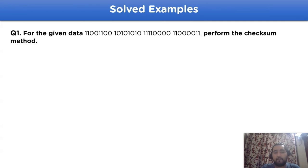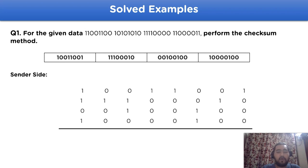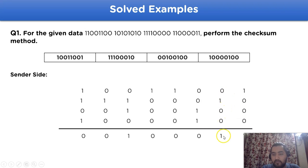Now let's take a look at a solved example. For the given data, we perform the checksum method. The data is divided into four parts — that is 4 k blocks with 8 bits in each block. At the sender side, we add all the given data. The addition begins: 1 0 0 0, then 1, 0 1 0 0, giving 1 0 0 1, with a carry of 1.